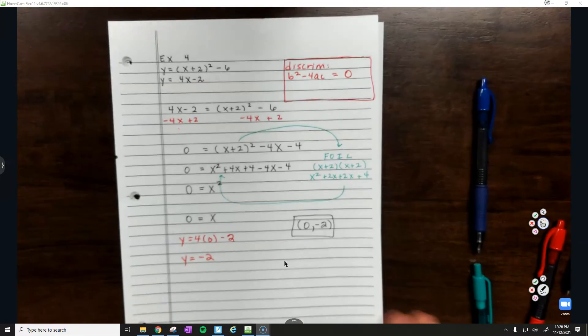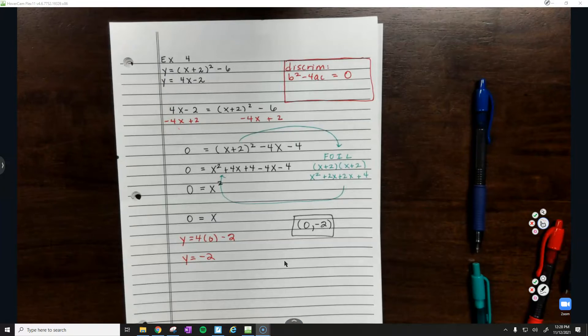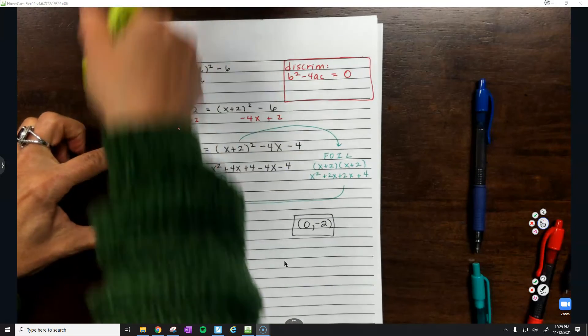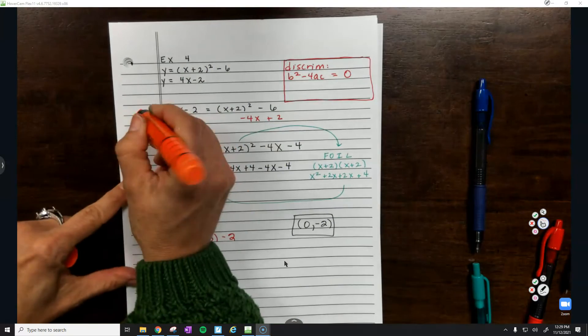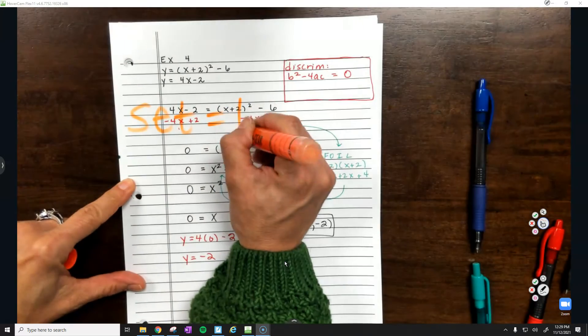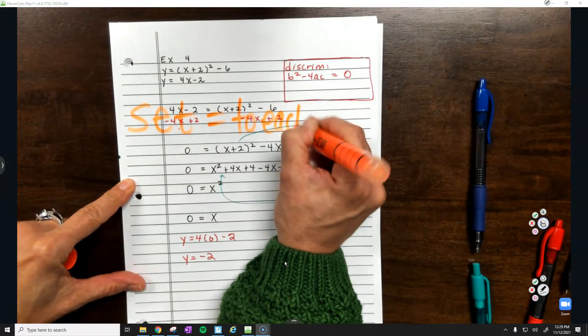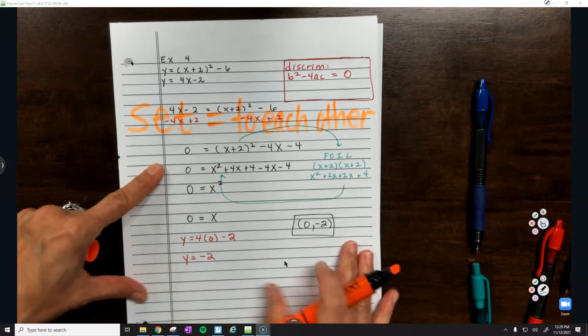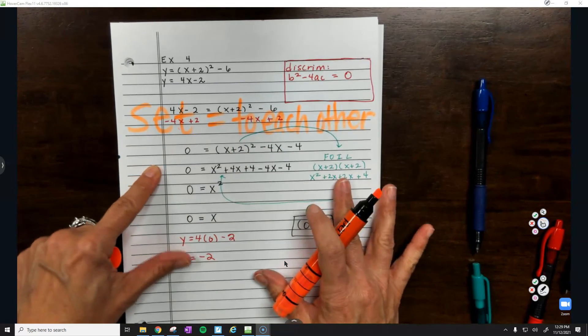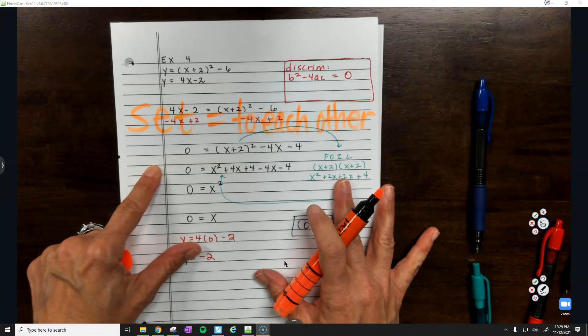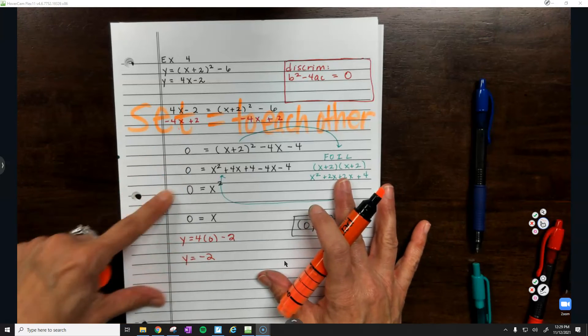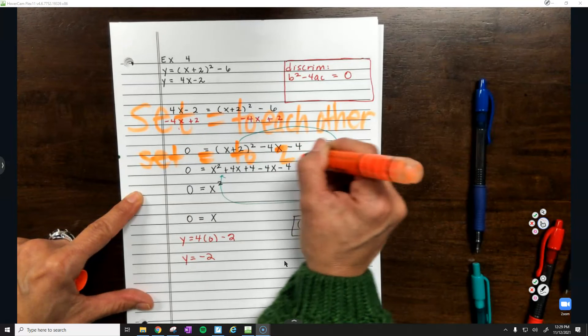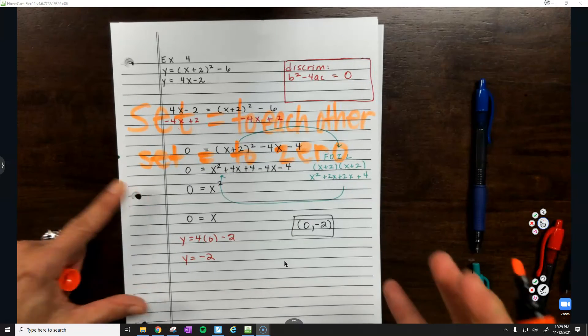Let's go back and recap. We set them equal to each other. Then what did we do? We set equal to zero. And then what? FOIL.